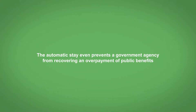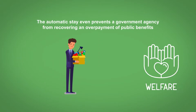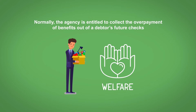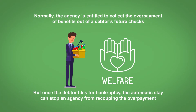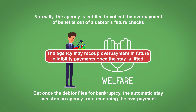The automatic stay even prevents a government agency from recovering an overpayment of public benefits, such as unemployment or welfare payments. Normally, the agency is entitled to collect the overpayment of benefits out of a debtor's future check. But once the debtor files for bankruptcy, the automatic stay can stop an agency from recouping the overpayment. The agency may recoup overpayment in future eligibility payments once the stay is lifted.